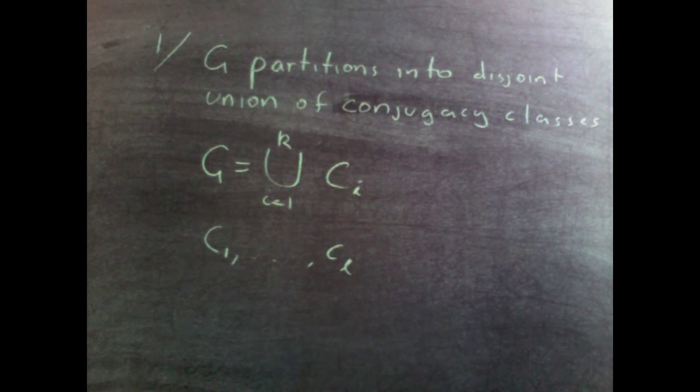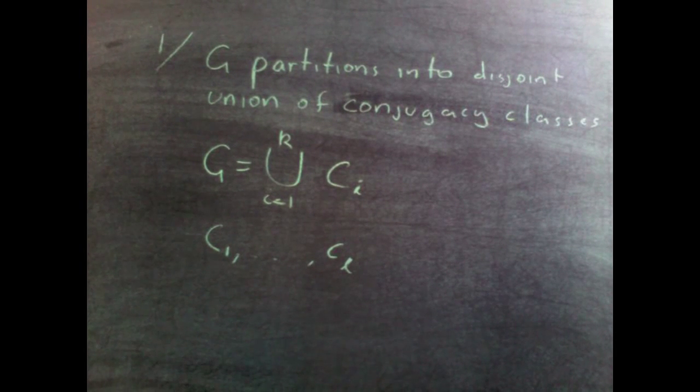Conjugacy classes will consist of some elements. Some might consist of 1, 2, 3, I'm not interested. I'm just saying that for all the ones, if there are any, which have just one element, we'll put them at the beginning. And we'll say the first l of them consists of just one element.